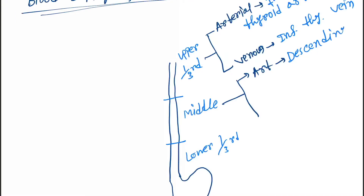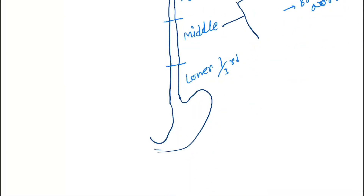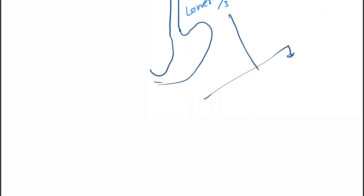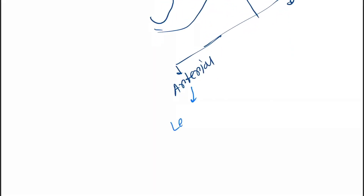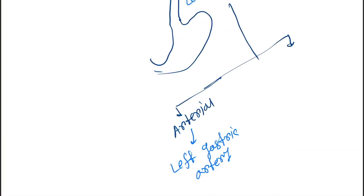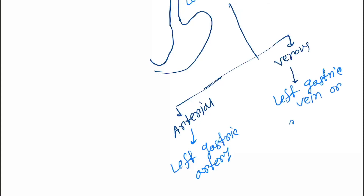For the middle third, the arterial supply is by the descending aorta and bronchial arteries, and the venous supply drains accordingly. For the lower one third, the arterial supply is done by the left gastric artery.